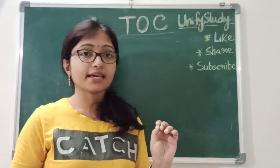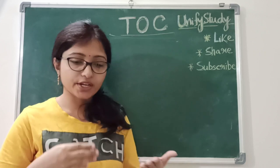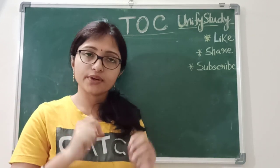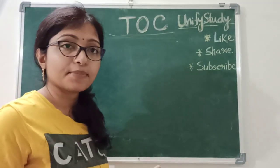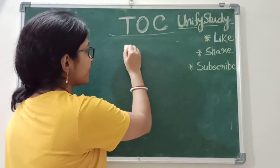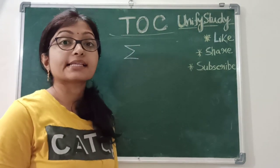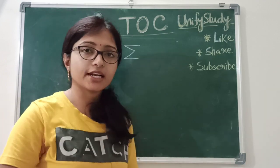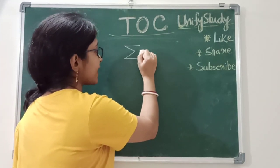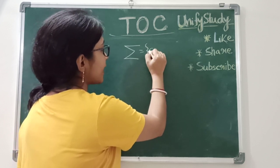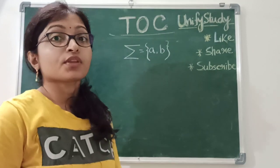Here there is something like languages. I am speaking now in English, so English is a language. When you learn English, you first learn some alphabets — like A, B, C, D. So here also there are some alphabets, and we denote them as Sigma. Sigma is the input alphabet. In English there are alphabets A to Z. Same way, if I am taking a language that accepts two letters like A and B, this is the alphabet.